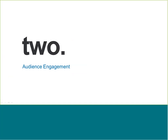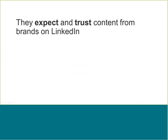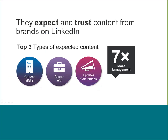Hopefully this provided good context for the fact that there's a ton of content happening on LinkedIn. When you're thinking about how to engage with members, your brand messaging will be competing for share of voice against all of this. The top three types of content that get the most engagement relate to current affairs, career information, and updates from brands — and these have a seven times higher engagement rate than content specifically about finding a next job. It's really about long-term success and elevating their professional identity.